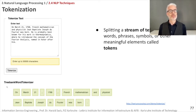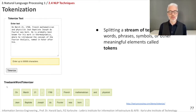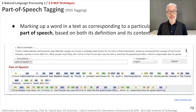Here we have a sentence about Jean-Baptiste Joseph Fourier, which is simply broken down into tokens — into words. You have to distinguish how to handle punctuation: what do you do with periods, commas, and so on? There are several variants, and you can try them out in the demo tool linked here for tokenization.